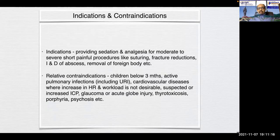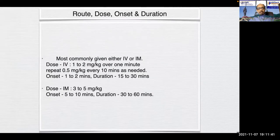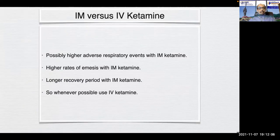Indications include providing sedation and analgesia for moderate to severe short painful procedures like suturing, fracture reductions, incision and drainage, and removal of foreign body. Relative contraindications include children below 3 months, active pulmonary infections, cardiovascular diseases where increase in heart rate and workload is not desirable, suspected or increased intracranial pressure, glaucoma or acute globe injuries, thyrotoxicosis, porphyria, and psychosis. Intravenously, the dose is 1 to 2 mg/kg over a minute; repeat 0.5 mg/kg every 10 minutes as needed. Onset is within 1 to 2 minutes and duration 15 to 30 minutes. Intramuscularly it is 3 to 5 mg/kg with onset within 5 to 10 minutes and duration 30 to 60 minutes. Intravenous ketamine is preferred whenever possible.